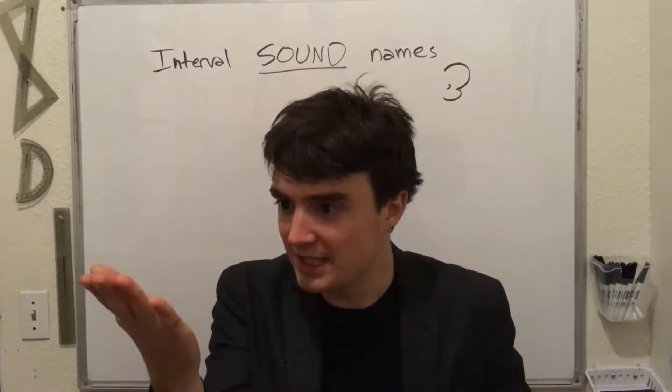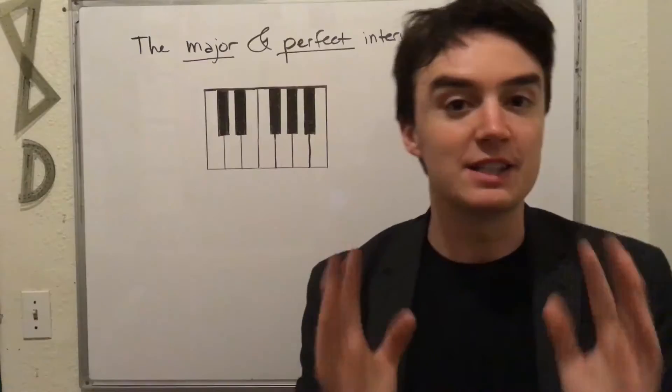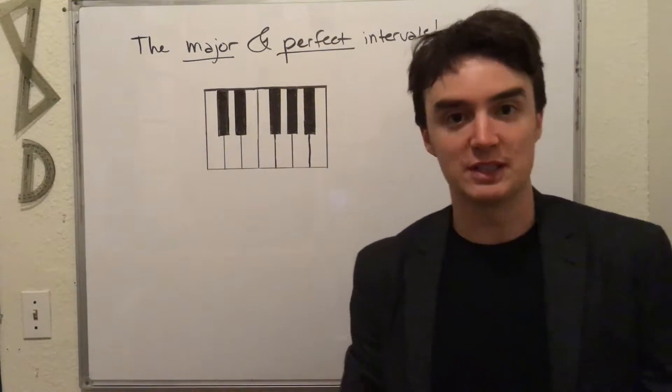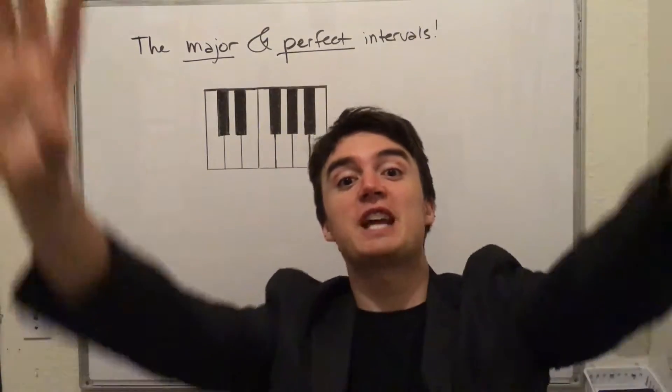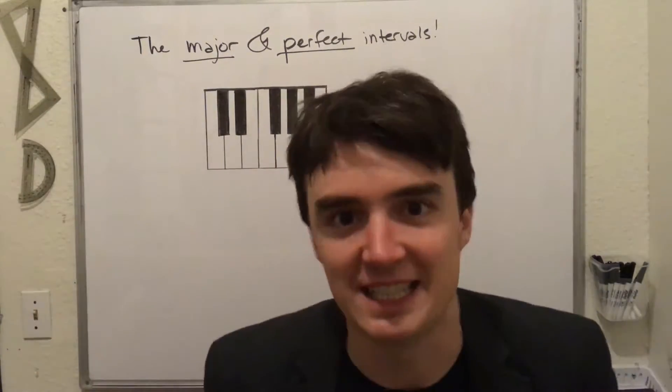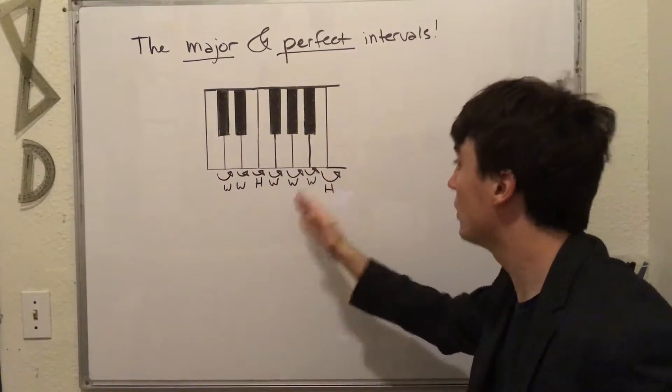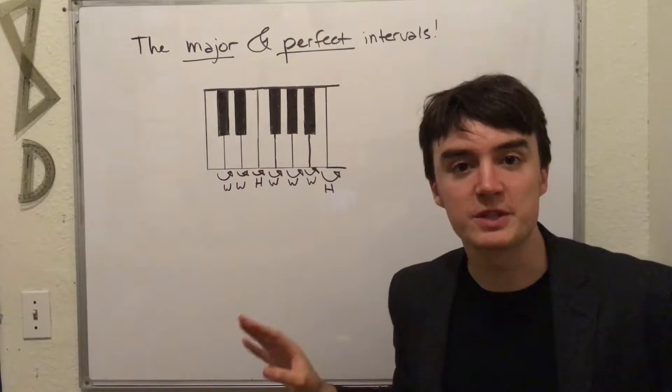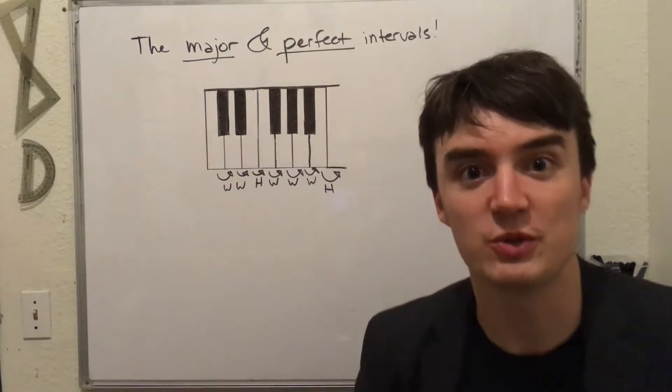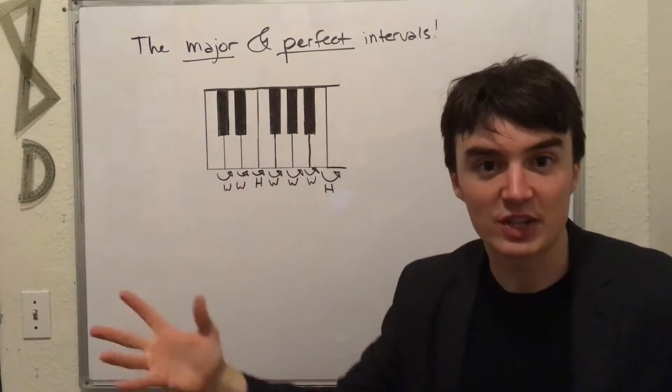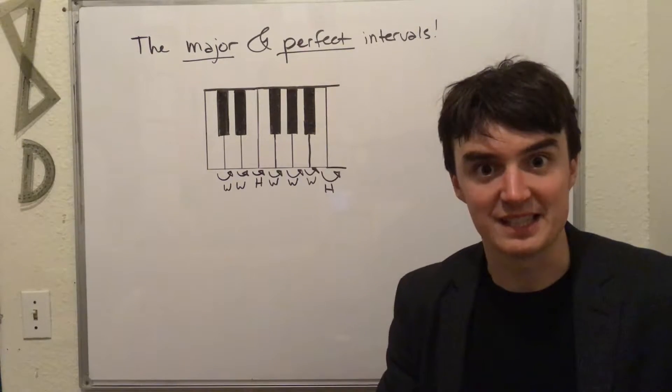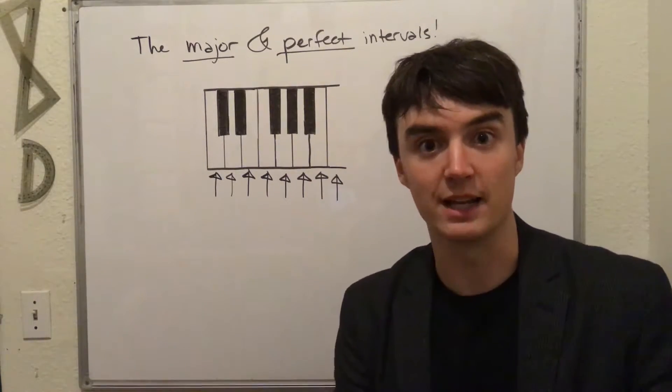So let's apply our quality and names. Let's start with the major and the perfect intervals. If you know your major scale, this is going to be so easy. And if you don't, go watch my video on scales. Whole, whole, half. Whole, whole, whole, half. This forms a major scale no matter which note you start on. In this case, we're starting on C because it's easy. So these are our notes in a C major scale.